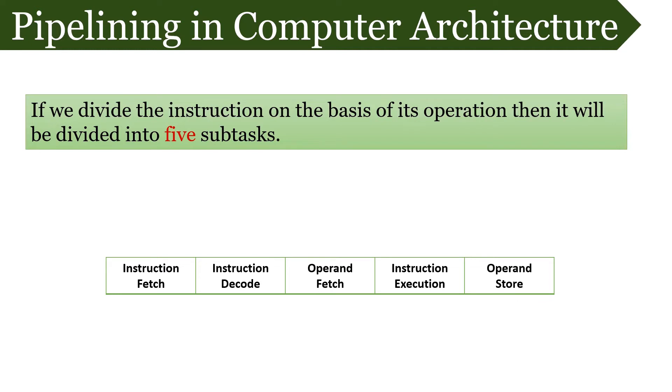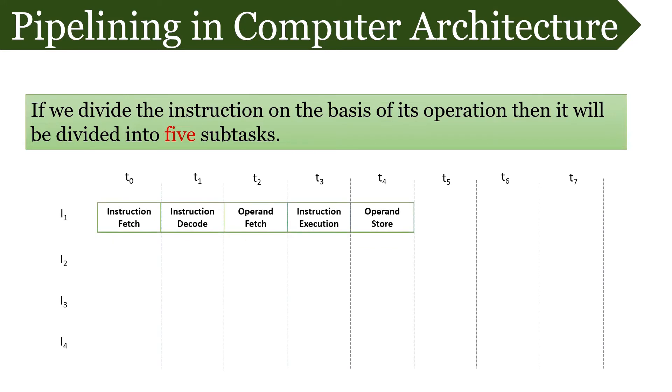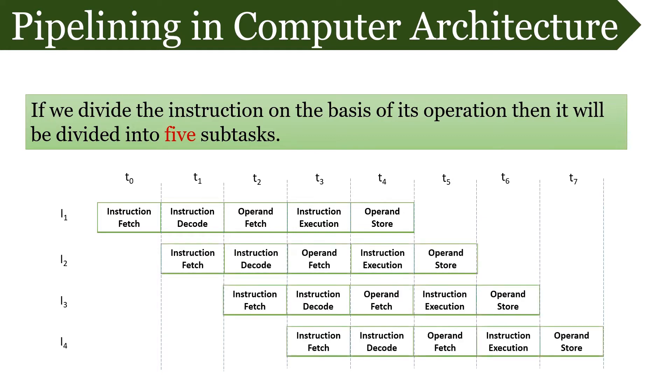After understanding the division of instruction, let us see how n number of instructions of a process are pipelined. Let's say we have 4 instructions and first instruction is completed in 5 clock cycles. As instruction is divided into 5 subtasks, it will require 5 clock cycles to complete execution. After 5th clock cycle, in every next cycle, execution of a new instruction is completed. With this way, the hardware of your system will never sit idle and will always keep on performing some operation. Remember, the same stage of 2 different instructions will never be executed in same clock cycle.